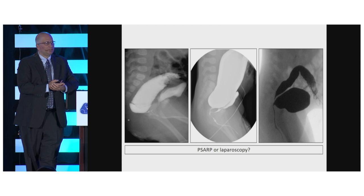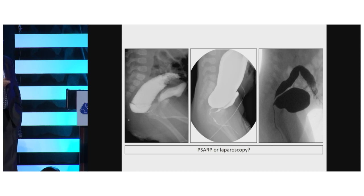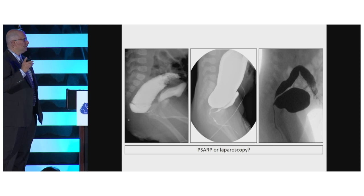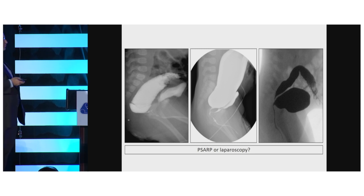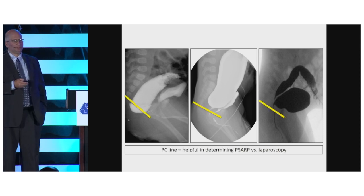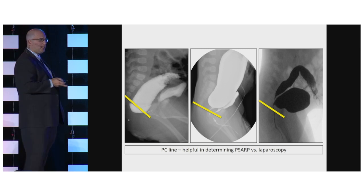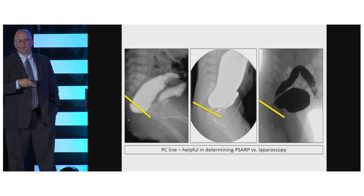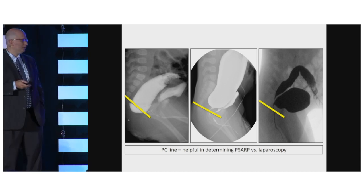You may be convinced that other things like the bladder neck, the urethra, seminal vesicles, or an ectopic ureter are in fact the rectum. Conversely, if you approach a very low rectum with laparoscopy you can either dissect very low and injure the urinary tract, or be too timid and leave behind the distal rectum - a so-called remnant of the original fistula. The tool I use to decide is the PC line: I draw a line from the pubic bone to the coccyx - if the rectum is below that line I can reach it posterior sagittally; if above, I use laparoscopy.